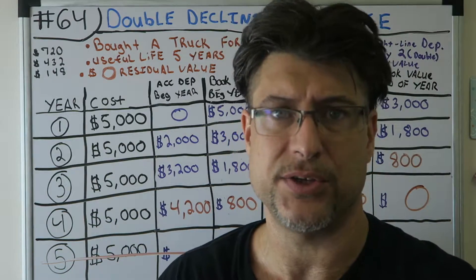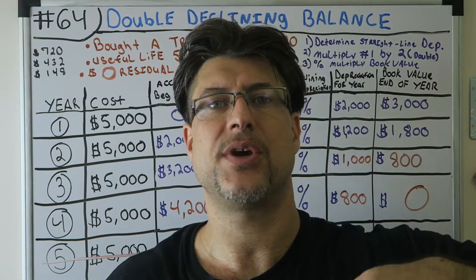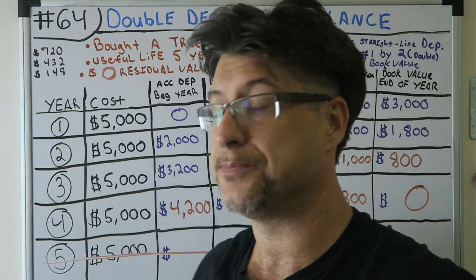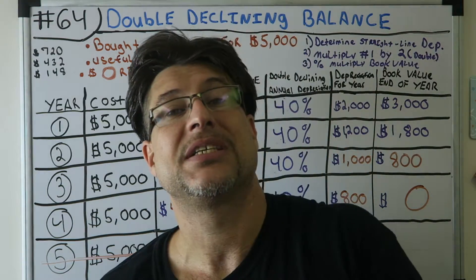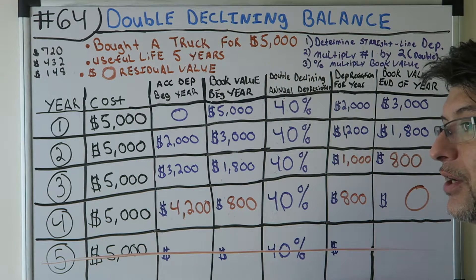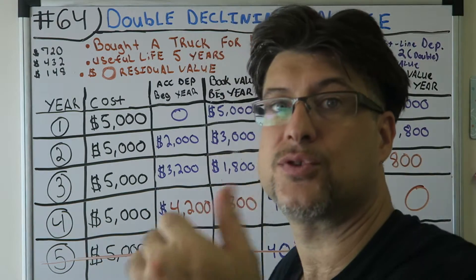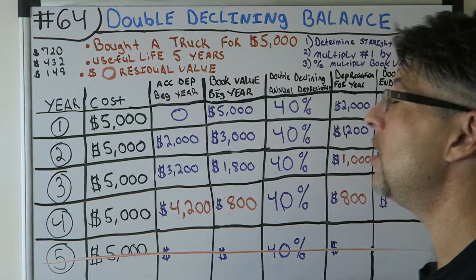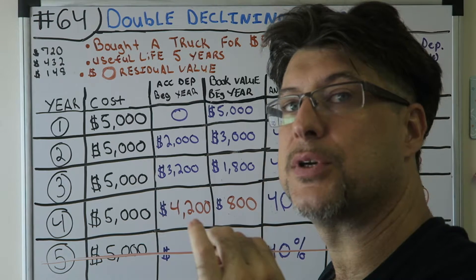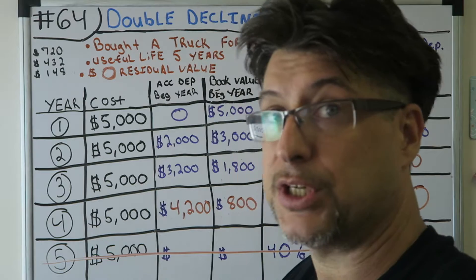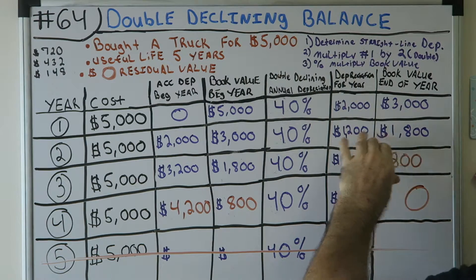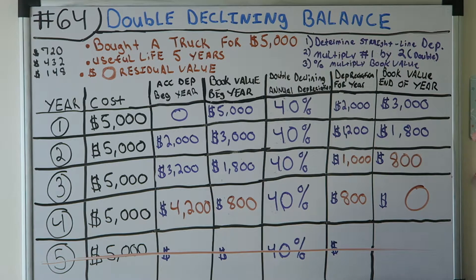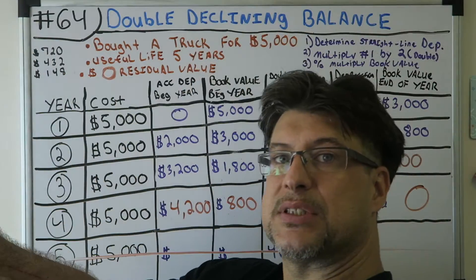We did straight-line depreciation previously — that's a straight amount of depreciation every year. With these facts, without residual value, that would have been a thousand dollars depreciation every single year. Now we're doing double declining balance, which is an accelerated depreciation method. Straight line would have been 20% a year — one divided by 5. For double declining balance we're doubling that percentage to 40%, so we take two thousand in the first year, twelve hundred in the second year.